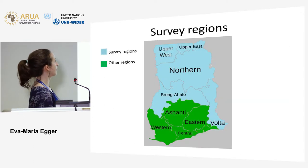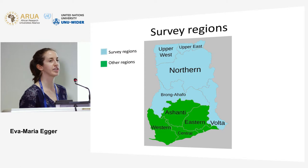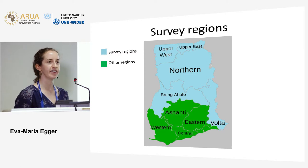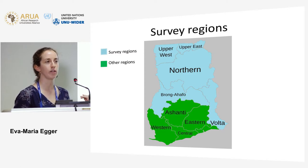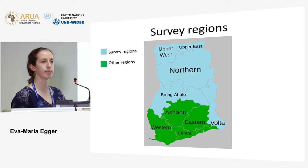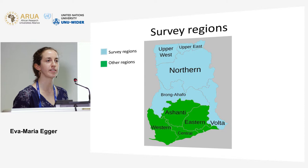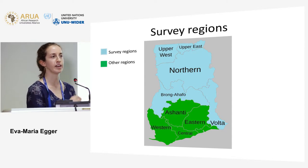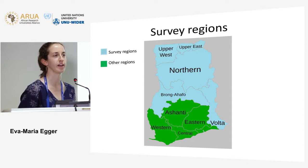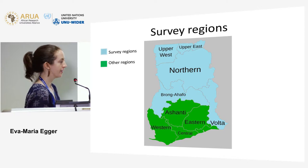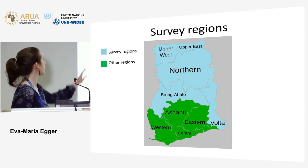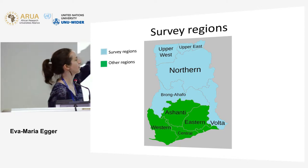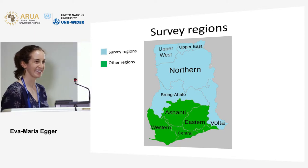The regions covered were chosen based on the most recent census data showing that these are the migrant-sending regions in Ghana. The blue ones on the map are the ones where we collected data.